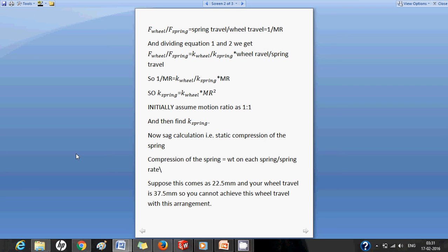Now by substituting these in the first and second equations and dividing that we finally get k spring is equal to k wheel into motion ratio squared. This is very important equation and this is very often used in vehicle dynamics. So in this equation the wheel rate is known, so there are two unknowns k spring and the motion ratio. So we need to assume one of these to proceed ahead. For this we assume the motion ratio to be 1 is to 1 and with this assumption k spring can be calculated.